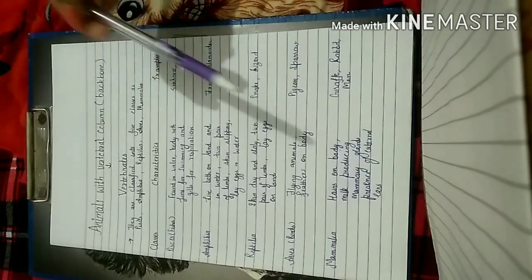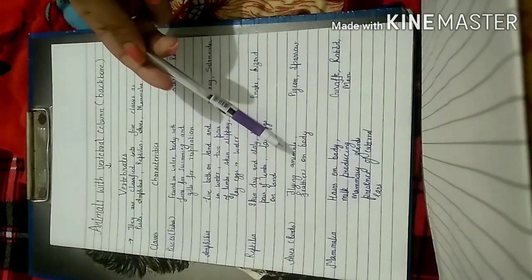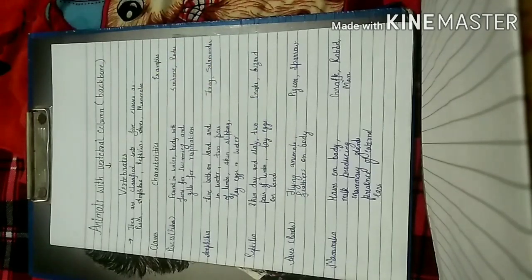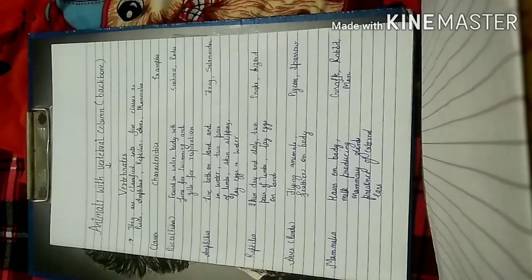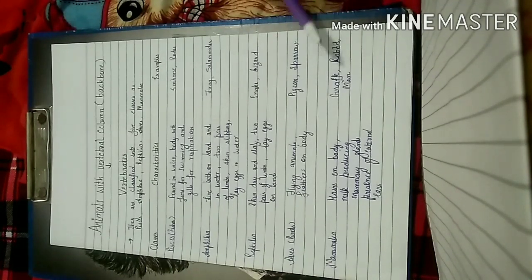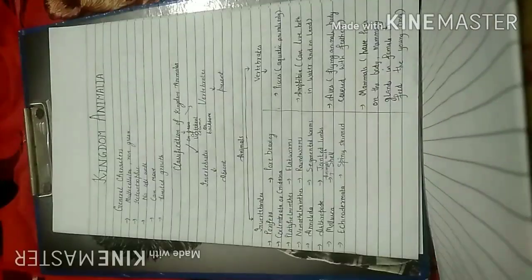Then we will study about Aves. These are the flying animals and they have feathers on their body, such as pigeon and sparrow. Another class is Mammalia. Mammals have hairs on the body and mammary glands are present in females to feed the young ones. Common examples are humans, giraffe and rabbit.